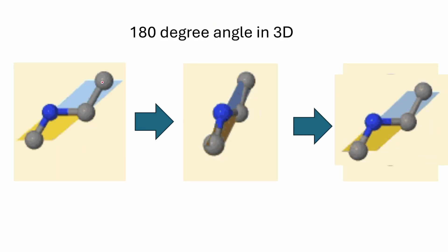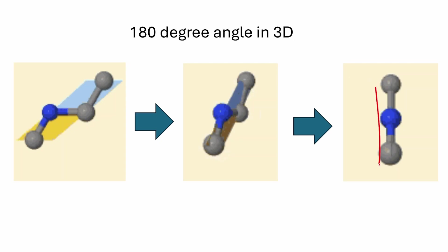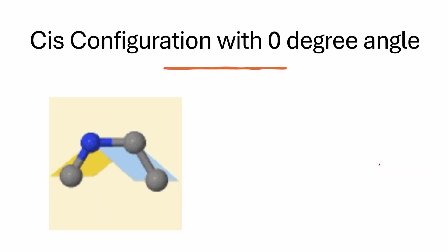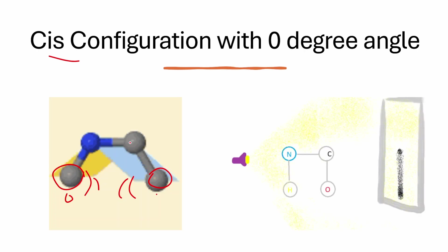In the cis configuration, both side chains — hydrogen and oxygen — are on the same side, which may cause steric hindrance. They interfere with each other's van der Waals forces and resist being on the same side. This corresponds to a zero-degree dihedral angle. The cis configuration is not stable; the trans configuration for the peptide bond is more stable.